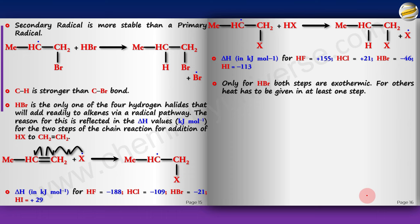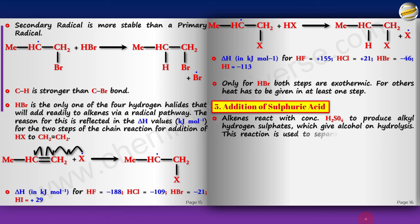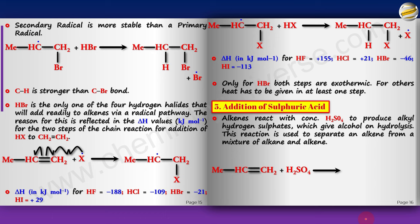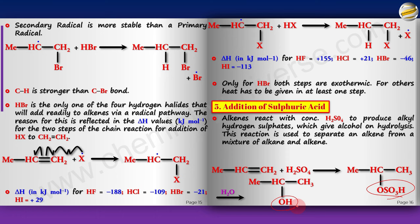The next reaction is addition of sulfuric acid, which eventually leads to alcohol. Alkenes react with concentrated sulfuric acid to produce alkyl hydrogen sulfates which give alcohol on hydrolysis. This reaction is used to separate an alkene from a mixture of alkene and alkane. Markovnikov addition occurs: H goes to the terminal carbon and HSO4− goes to the middle carbon. In the presence of water, the sulfate is replaced by OH via nucleophilic substitution since water is a better nucleophile and HSO4− is a good leaving group.